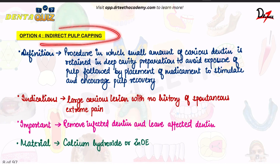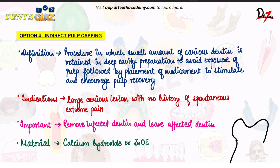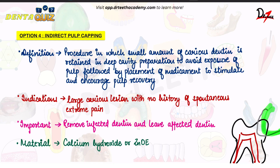Moving on to indirect pulp capping. Indirect pulp capping is just like direct pulp capping; the only difference is: suppose this is the pulp and this is the caries — you can see how deep the caries is. So when we go to excavate this caries, there might be a chance that if we excavate this last layer, we might end up exposing the pulp. So to avoid this exposure, we leave this carious dentine here — this part of carious dentine is left.